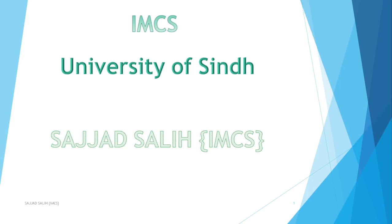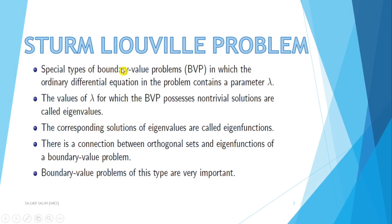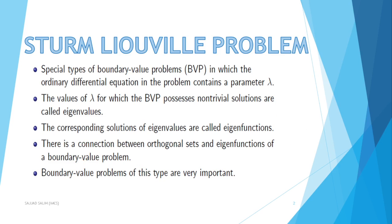Today's topic is Sturm-Liouville problems. A Sturm-Liouville problem is a special type of boundary value problem in which the ordinary differential equation contains a parameter lambda. The values of lambda for which the boundary value problem possesses non-trivial solutions are called eigenvalues, and the corresponding solutions are called eigenfunctions. In the previous lecture we also learned that there is a connection between orthogonal sets and eigenfunctions of a boundary value problem.